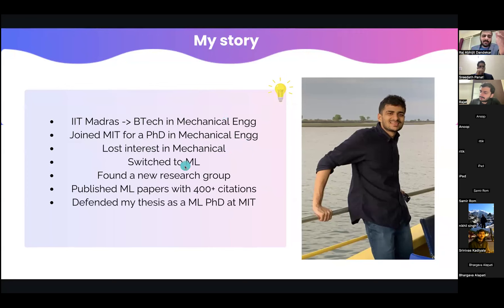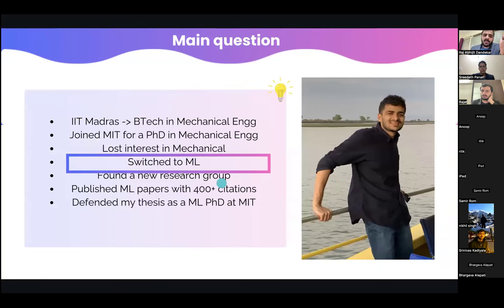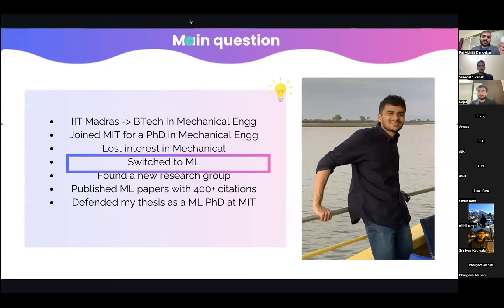That completely changed my life. I switched to ML, and in three years I published machine learning papers that now have 400-plus citations. I defended my PhD thesis at MIT and got multiple job offers — companies reached out to me without me even applying. My topic was scientific ML applied to the COVID-19 pandemic, working with governmental agencies and startups. That's the origin story of this webinar itself. I now strongly believe that if I can make this change, anyone can. In today's webinar I'm going to share that path and roadmap with you.